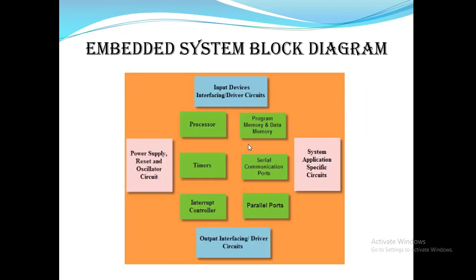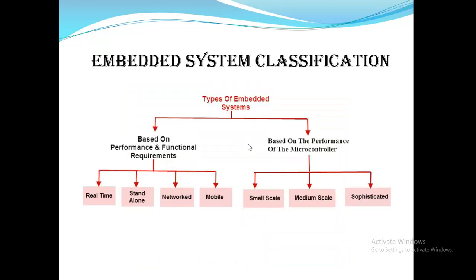The embedded system block diagram includes input devices, application-specific circuits, power supply, reset and oscillator circuits, and input/output interfacing with driver circuits. Internally, the embedded system contains a processor, program memory, data memory, timers, serial communication ports, parallel ports, and an interrupt controller.